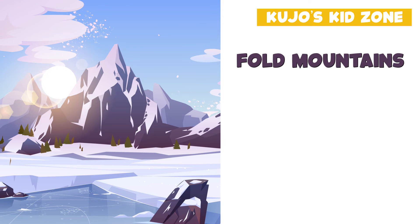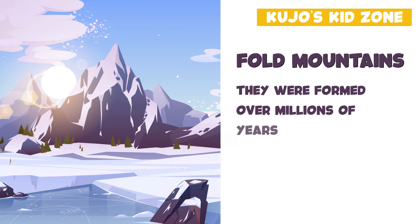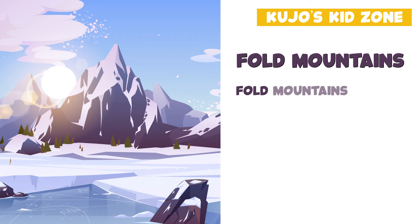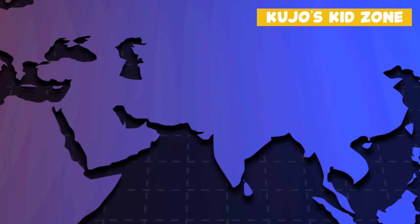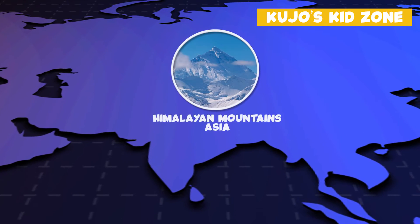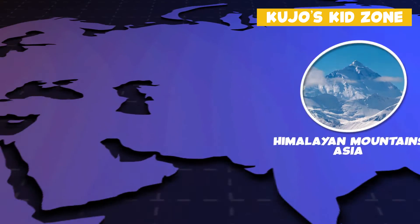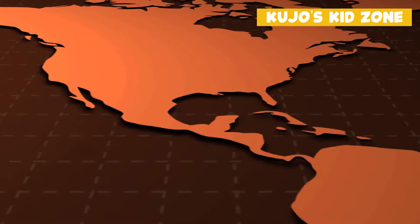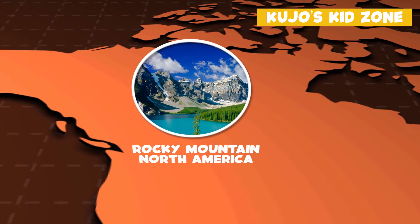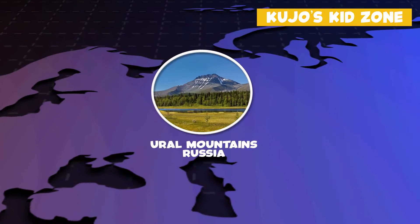Fold mountains are the most common type of mountain. They were formed over millions of years ago. Fold mountains are formed when two tectonic plates collide and their edges crumble. An example of a fold mountain would be the Himalayan mountains in Asia, the Alps in Europe, the Andes in South America, the Rockies in North America, and the Urals in Russia.